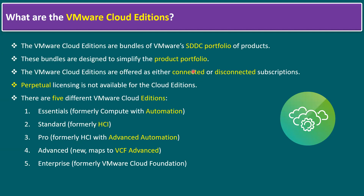VMware Cloud Editions are offered as either connected or disconnected subscriptions. Connected means it's a cloud-based model, while disconnected refers to air-gapped or customer dark-site environments. Importantly, perpetual licensing is not available for the Cloud Editions.